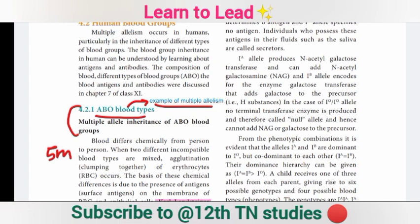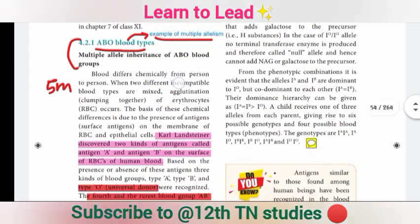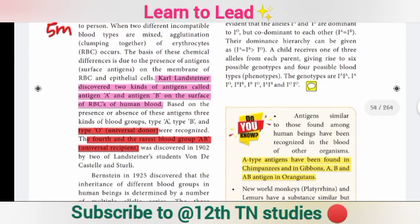Let's start with the definition of multiple allelism. ABO blood types is an example. Karl Landsteiner discovered two kinds of antigen — Antigen A and Antigen B. These antigens are found on the surface of RBC, which stands for red blood cell. The antigens are present on the surface of the red blood cell.